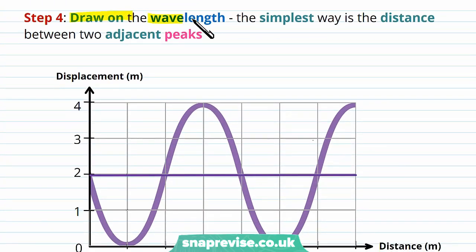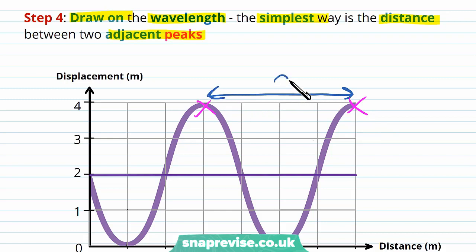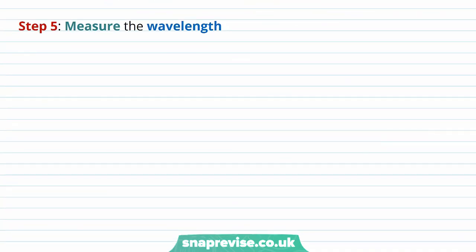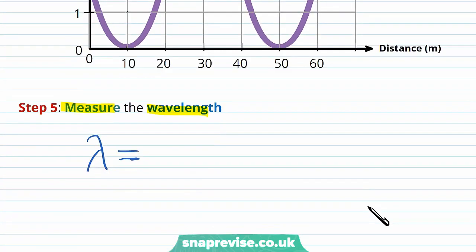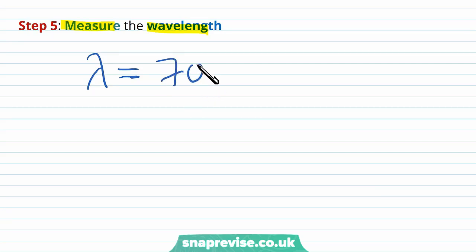Our next step is to draw on the wavelength. The simplest way is the distance between two adjacent peaks. To find the wavelength, we measure the distance between these two peaks since they're both at the same point in the wave cycle. The second peak is at a distance of 70 metres and the first peak is at a distance of 30 metres, so the wavelength lambda equals 70 minus 30, giving us a wavelength of 40 metres.